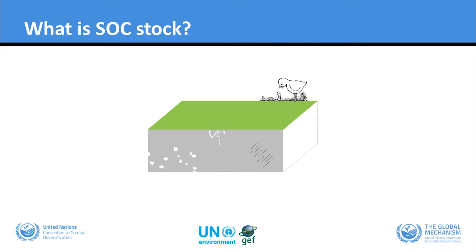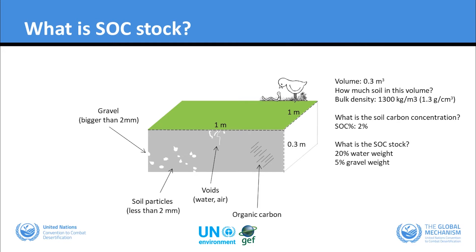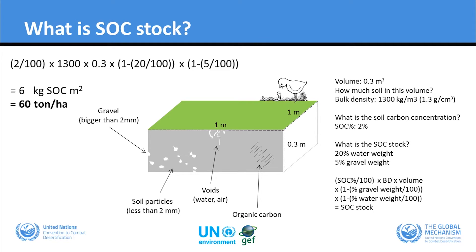So to begin, what is soil organic carbon stock? We have some soil with a volume, and in that volume we need to know how much gravel there is, the weight of the soil particles, and the voids full of water and air. We also need the organic carbon concentration — so the bulk density, carbon concentration, water weight, and gravel weight — in order to work out the soil organic carbon stock in tons per hectare. For this example block of soil, it represents 60 tons per hectare.